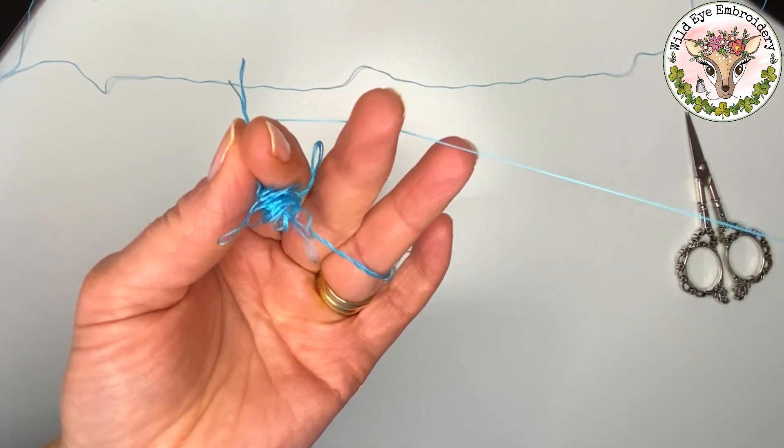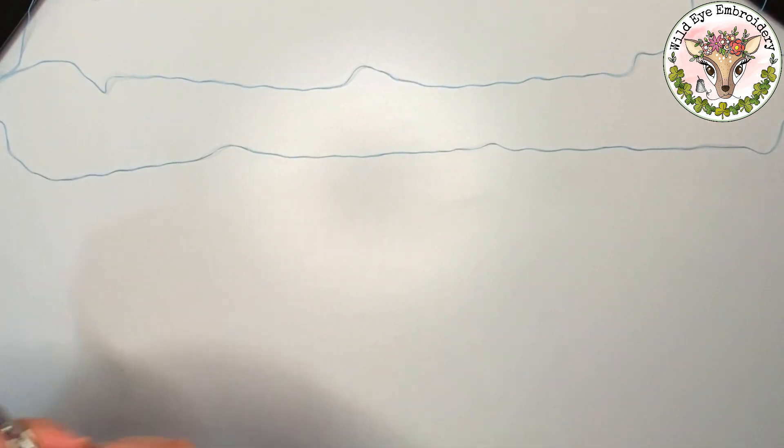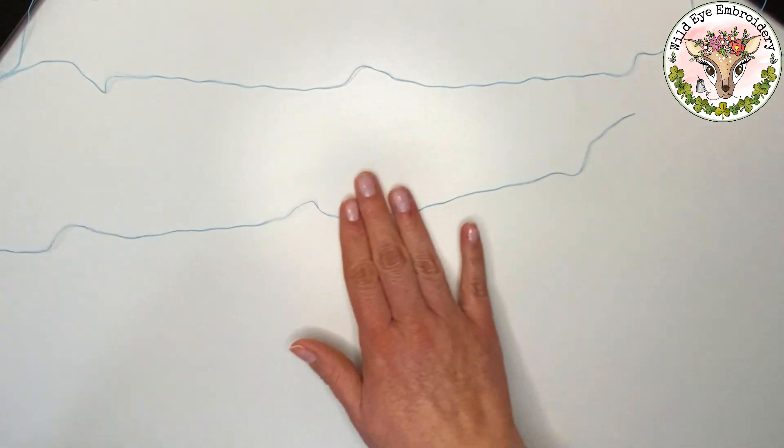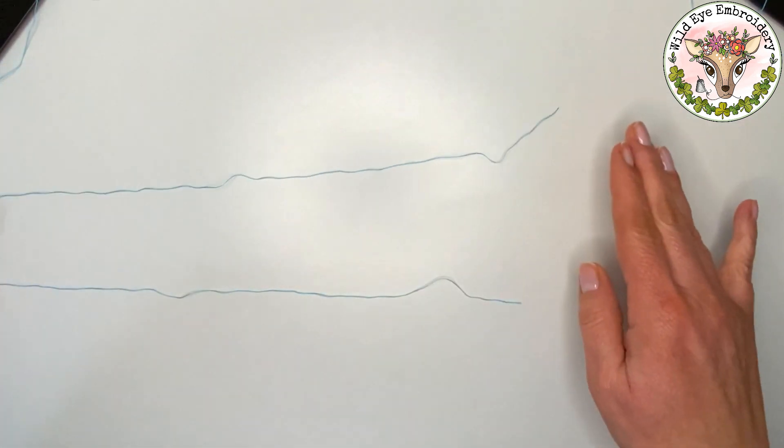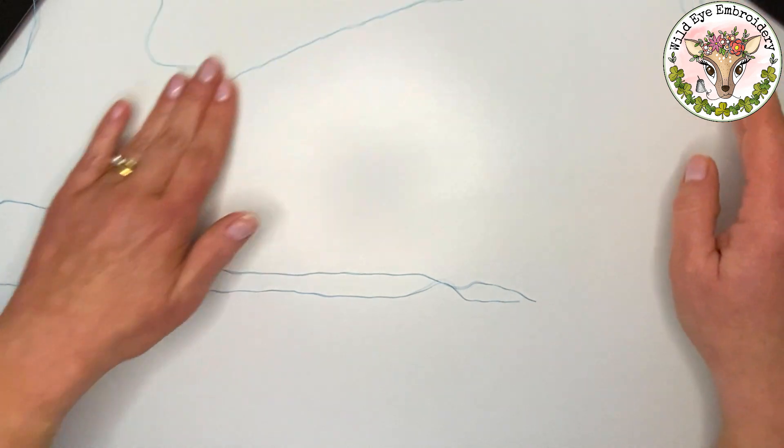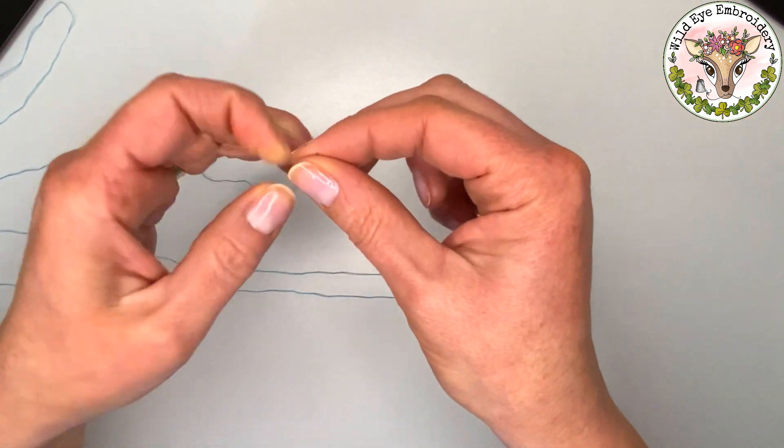And then I'm going to set aside the three strands that we don't need. Now obviously there's three individual strands here and we need to marry them up to form one strand that we can use to embroider with. The key here is to keep everything flat and smooth. Remember if your threads are twisted, if you're doing a stitch like satin stitch you need them to lie flat.